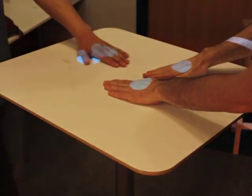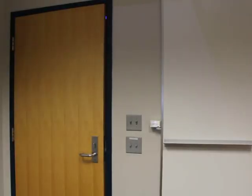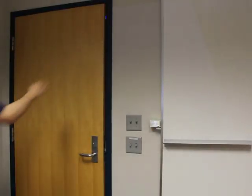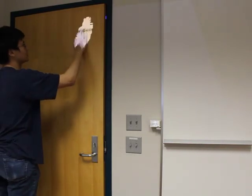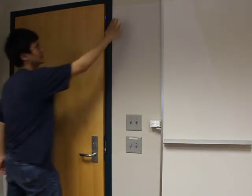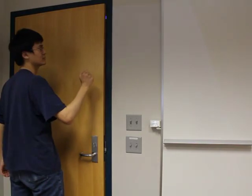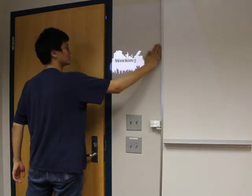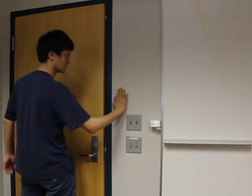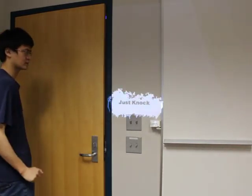Sophisticated applications can be created from collections of interactors. For example, here is a simple status message application. First, the user paints a presence interactor onto the door, followed by 3 contact interactors on an adjacent wall. When complete, the user's configuration is saved and the application starts.